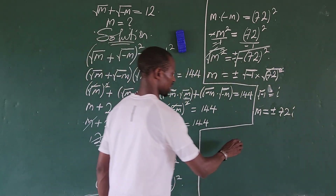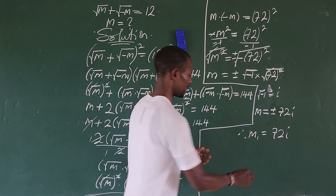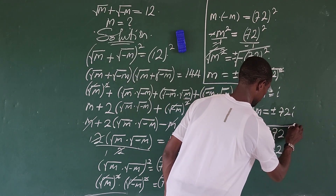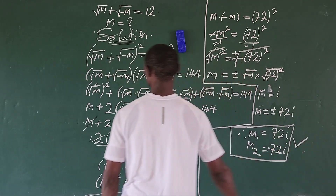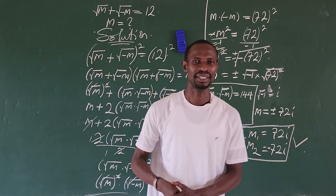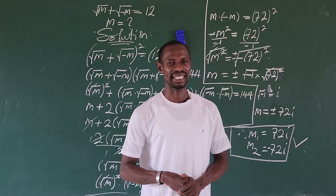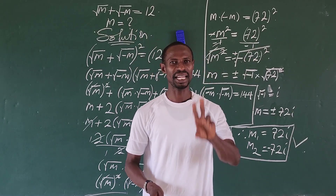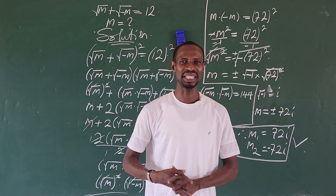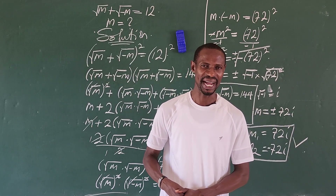So in all, m₁ equals 72i and m₂ equals negative 72i. These are the two roots that satisfy this radical equation. This brings us to the end of today's math class. If you learned something, drop it in the comment section. If you have a better or third approach, leave it in the comments so everyone can learn. Thanks for being here — until we meet in the next class, don't stop winning. Bye for now!